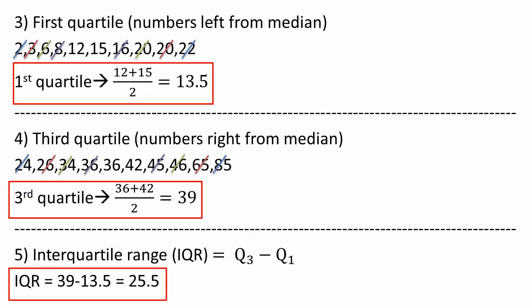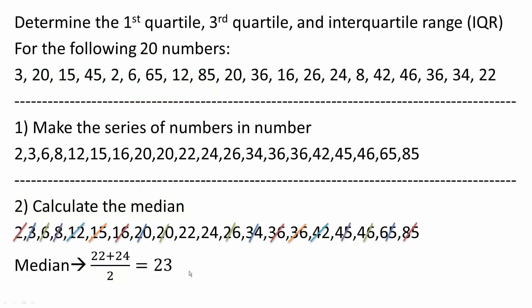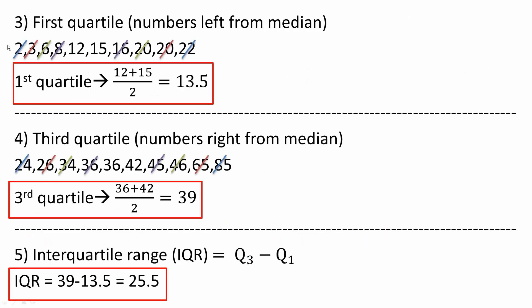Next, in order to get the first quartile, I take the numbers left from the median. So the median was 23, so I go left. I go from 2 all the way to 22, getting all of those numbers.